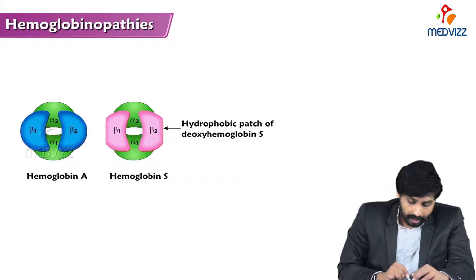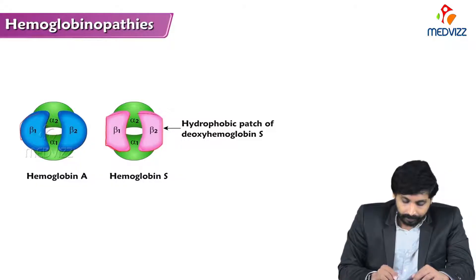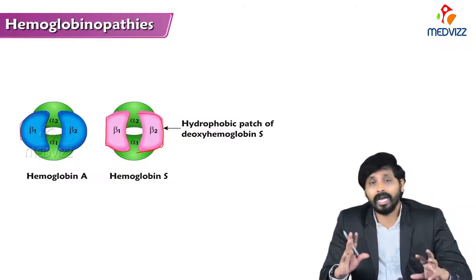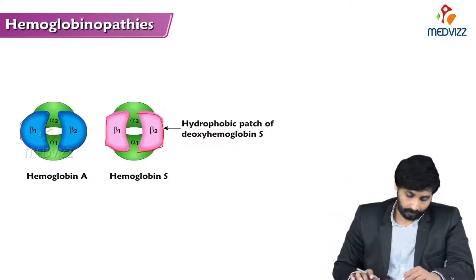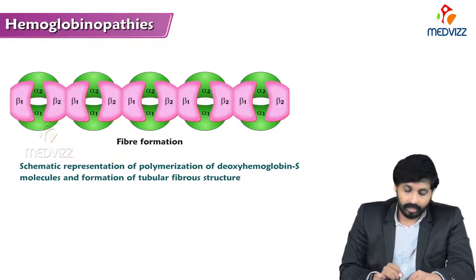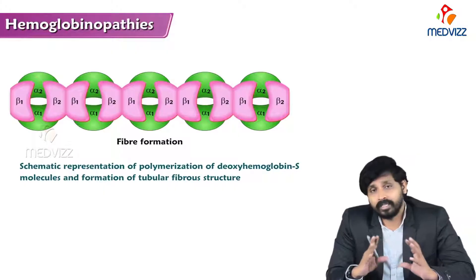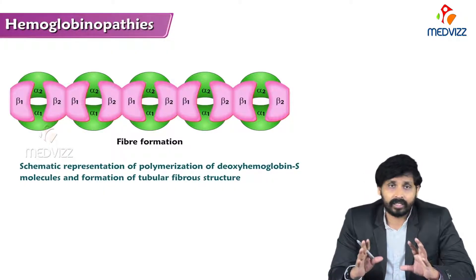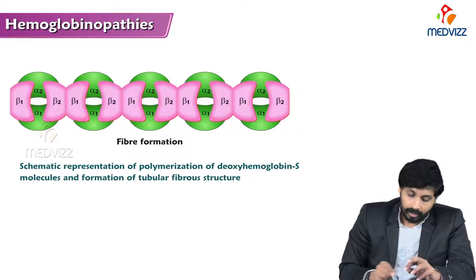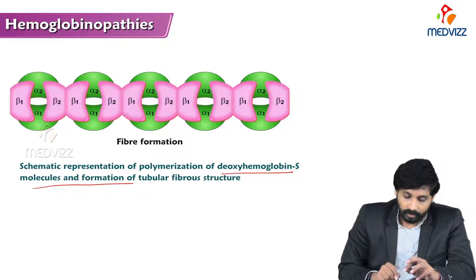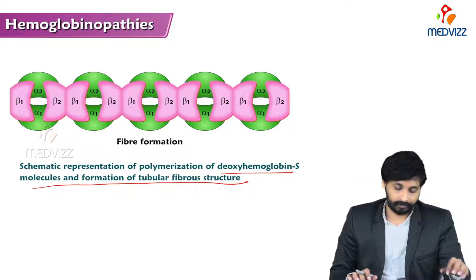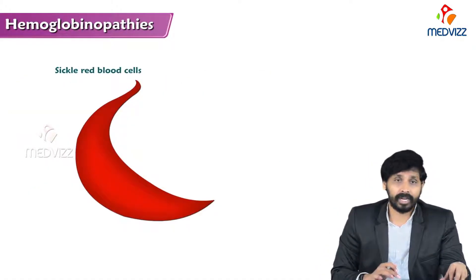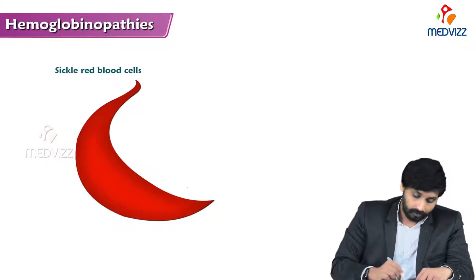The diagrammatic representation shows the difference between hemoglobin A and hemoglobin S — the sickle shape is clearly visible. Because of the sticky patches, HbS molecules stick together and form patches, leading to fiber formation. In contrast, normal hemoglobin molecules do not join from one RBC to another. In sickle cell disease, polymerization of deoxy HbS molecules forms tubular fibrous structures, with the molecules adhering to each other in a straight line.